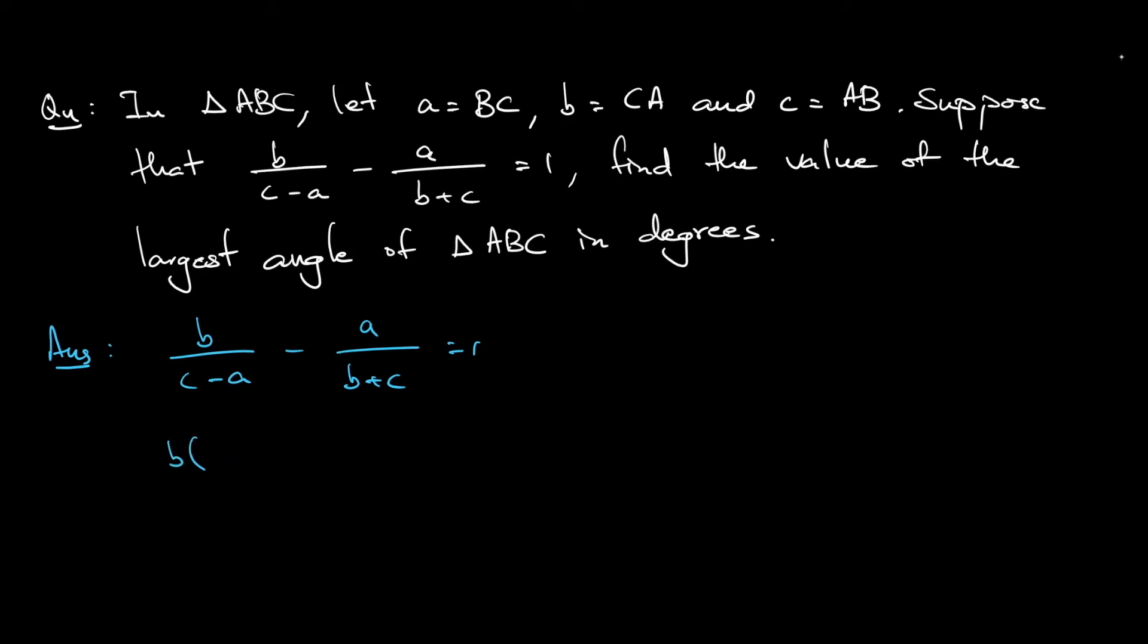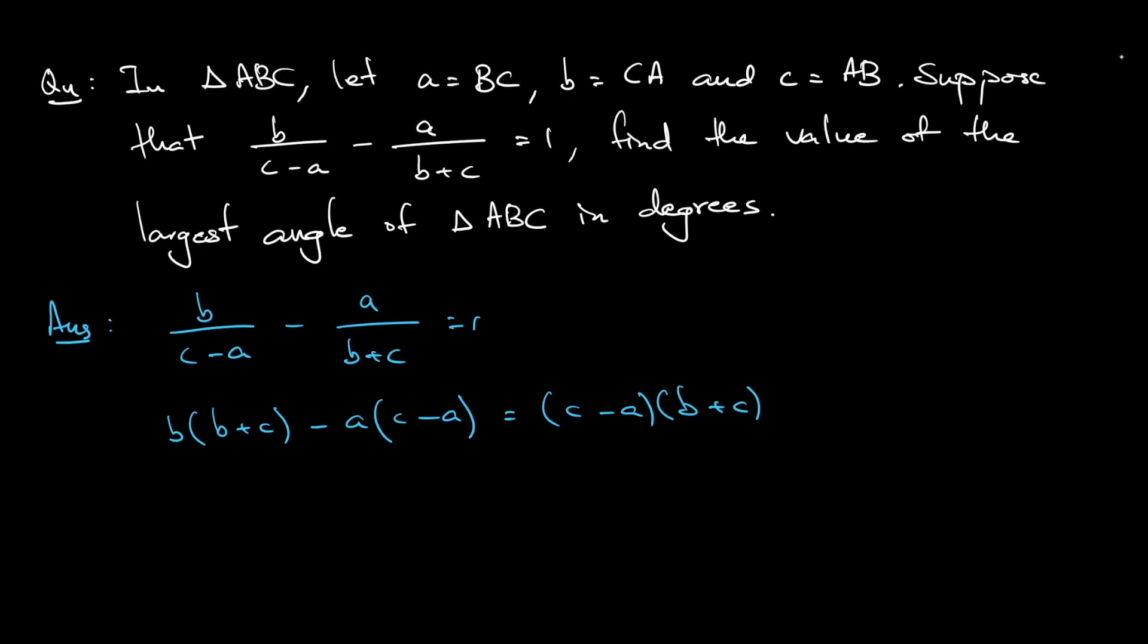Okay, the denominator can put it to the right hand side. So it becomes (c-a) multiplied by (b+c). Expand it out.